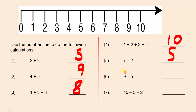The next one is nine minus five. Put your pencil on the nine because that was the first number. Minus five means we go five to the left: one, two, three, four, five. We've landed on four, so that's the answer.